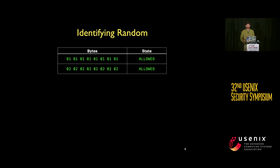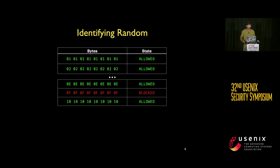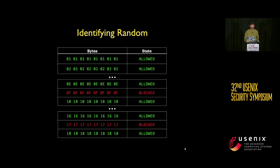We then set out to identify how the GFW was determining what was and wasn't random traffic. To do this, we sent payloads with the same byte repeating, incrementing from 0x01 up to 0xFF hex. We found that for bytes like 0x01 and 0x02, we never experienced any blocking, but for payloads like 0x0F or 0x17, we would see blocking very consistently.